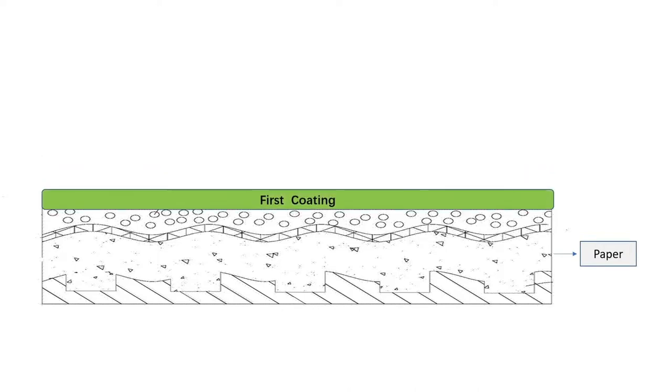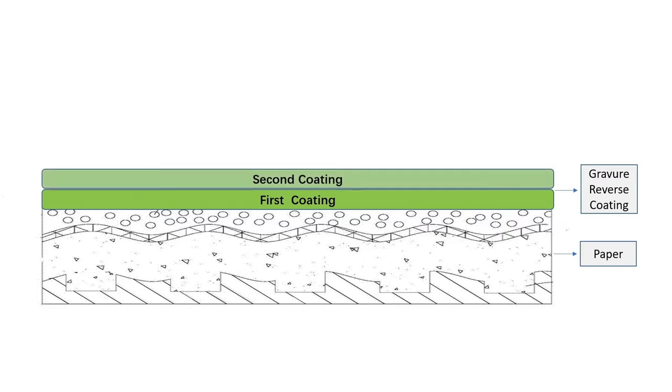The second coating creates an organic layer on the paper surface, which is waterproof and oil-proof. The paper surface evenness is much improved after the twice coating.